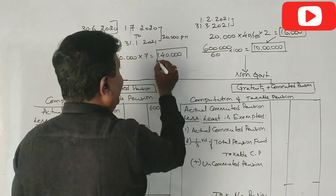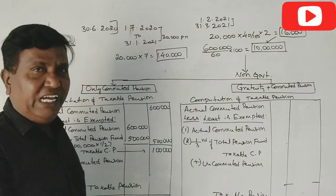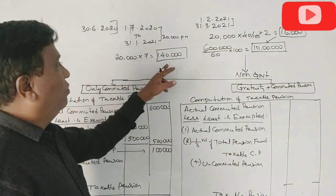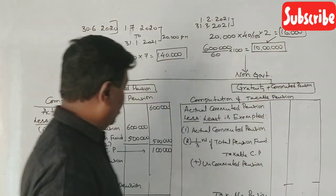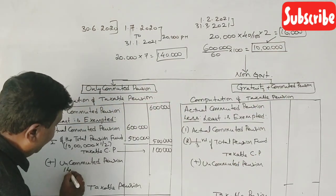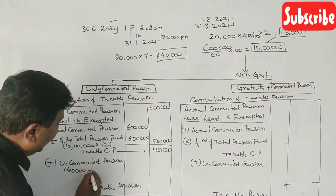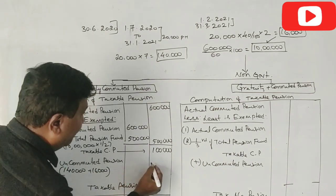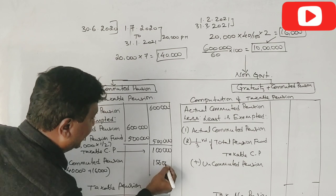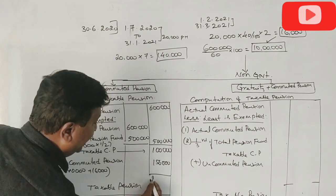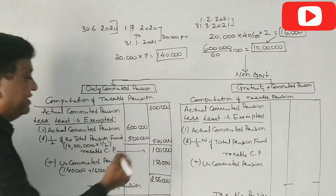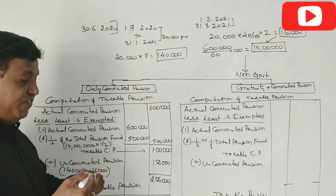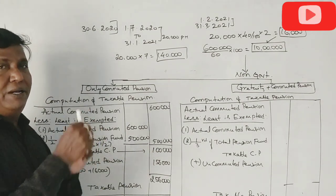So that is 1,40,000 plus 16,000 equals 1,56,000 rupees. Total taxable pension of 2,56,000 rupees if he is taking only commuted pension.